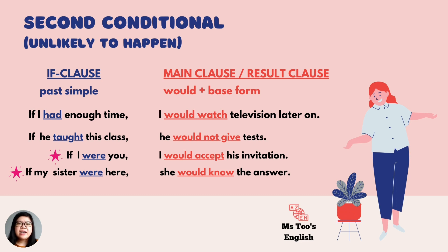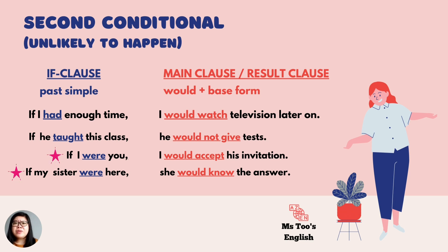For the second sentence: if he taught this class, he would not give tests. In actual fact, he's not the teacher of this class. So no matter whether he would give tests or not, that doesn't matter, because in actual fact this cannot happen — it will not happen. And for the third sentence: if I were you, I would accept his invitation. In actual fact, I can never be you. In my whole life, I cannot be you. So this is more like a supposition or imagination, and I use second conditional.